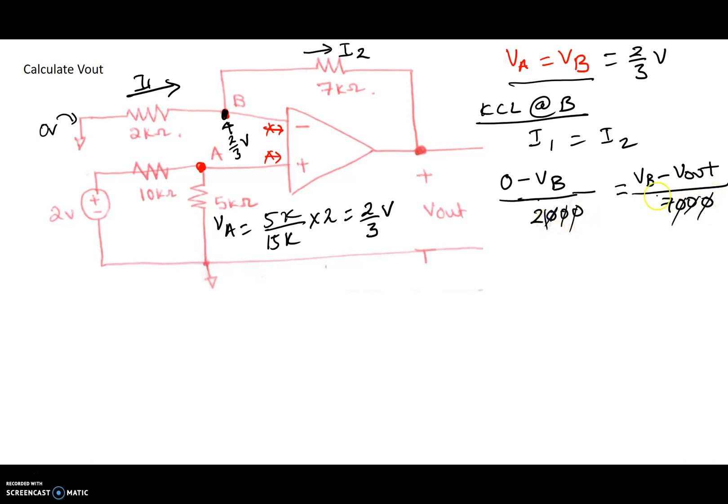So if we cross multiply, I get minus 7 VB equals 2 VB minus 2 Vout. Let's rearrange the terms. So we get 2 Vout equals 7 VB plus 2 VB.